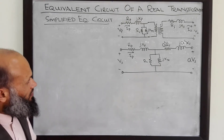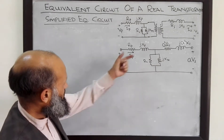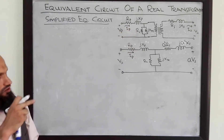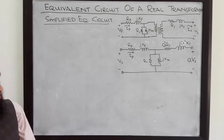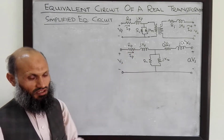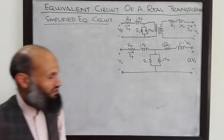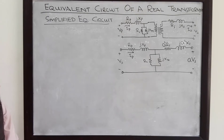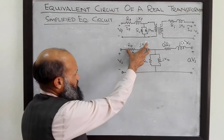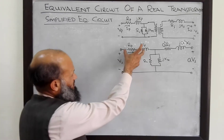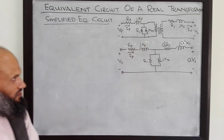What we observe is that this resistance — the resistance of the copper windings on the primary side of the transformer — generally has very low resistance because it is copper wire, so this resistance will be very small. Likewise, this effect due to leakage flux: if you have a good design of a transformer, leakage flux will be quite small. Therefore, this whole impedance is very small, and the voltage drop across this impedance will be very small.